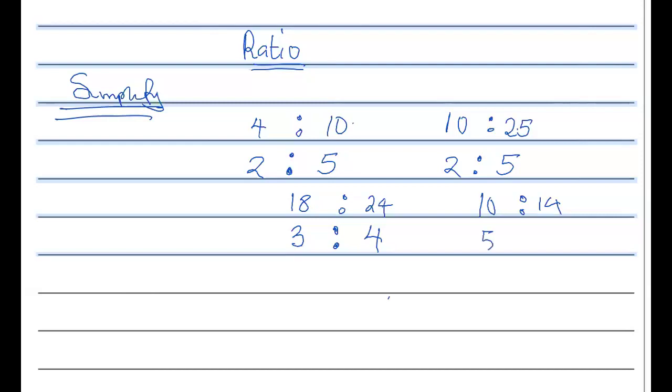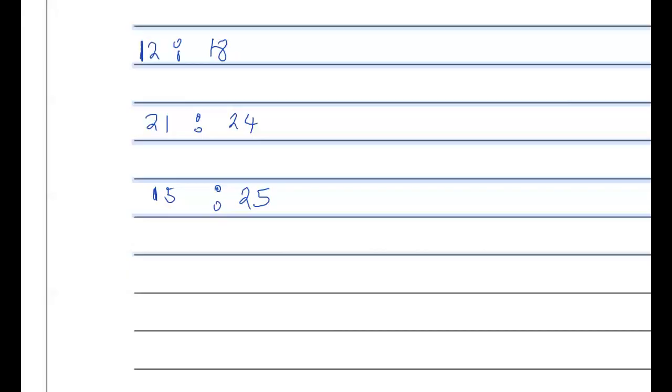10 divided by two is five, and 14 divided by two is seven. You can copy these down. Now try these: simplify 12 ratio 18, then 21 ratio 24, and also 15 to 25. The first one — what is 12 ratio 18? The answer is two ratio three.